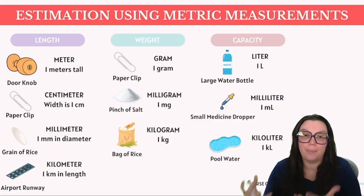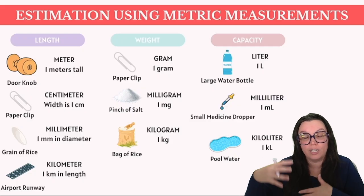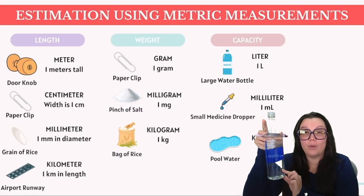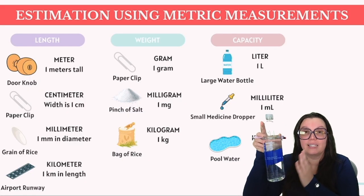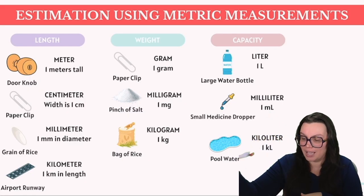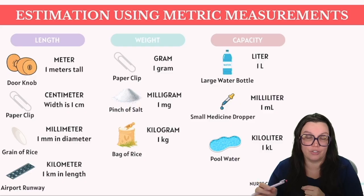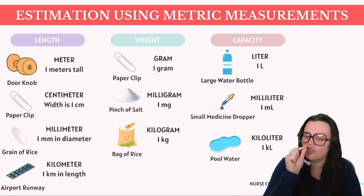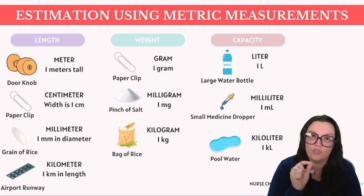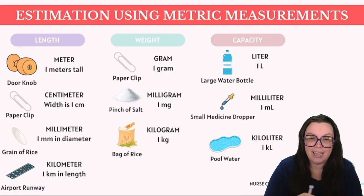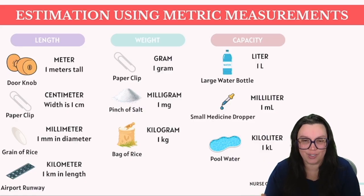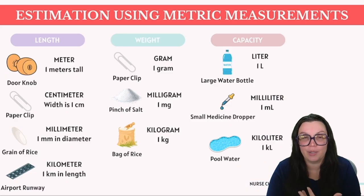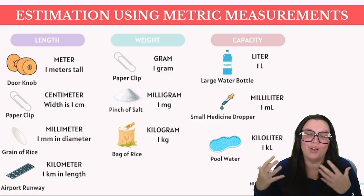Last up we have capacity. One liter is approximately the size of a large water bottle — like this water bottle right here. One milliliter is just like a small medication dropper amount of liquid, which is huge in healthcare. And one kiloliter is approximately the entire capacity of a pool of water.